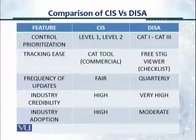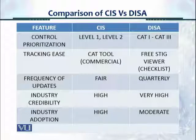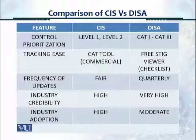In this next slide, we look at more features comparing CIS and DISA. For control prioritization or control severity, CIS gives a very good separation between level one and level two, and also does scored and unscored. DISA does it by CAT one, CAT two, and CAT three — CAT one is most severe, CAT three is least severe, and CAT two is in the middle.